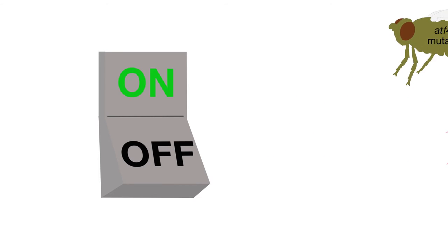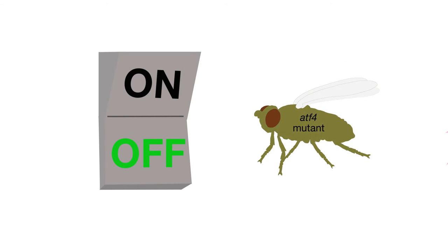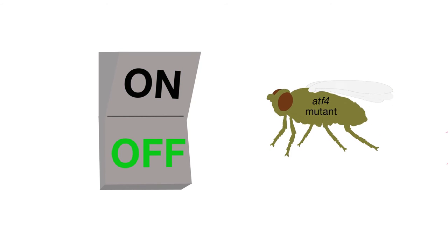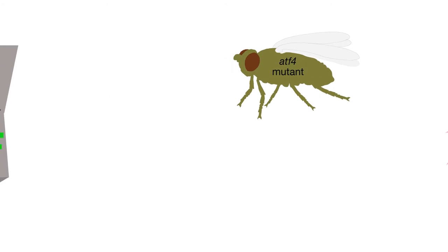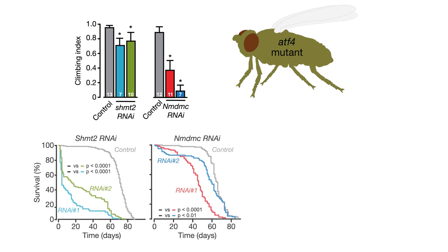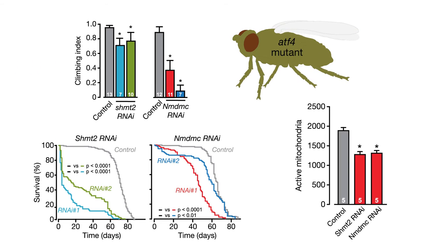When the expression of ATF4 is reduced in flies, expression of these mitochondrial genes drops. This drop results in dramatic movement defects, shortened lifespan, and dysfunctional mitochondria in the brain.